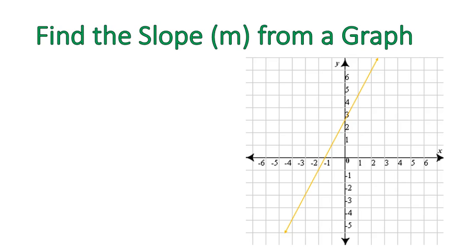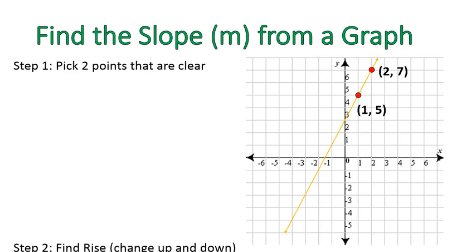So looking at this line, here are some steps for finding the slope when you're given a graph. First off, you're going to pick two points that are pretty clearly marked. Here's an example, 1, 5, and 2, 7. Notice I didn't pick a point like this, negative 1 half and positive 2. That would be a really difficult point to work with. So you want to pick two points that are pretty clear, and are going to be easy to work with. I like working with positive numbers.